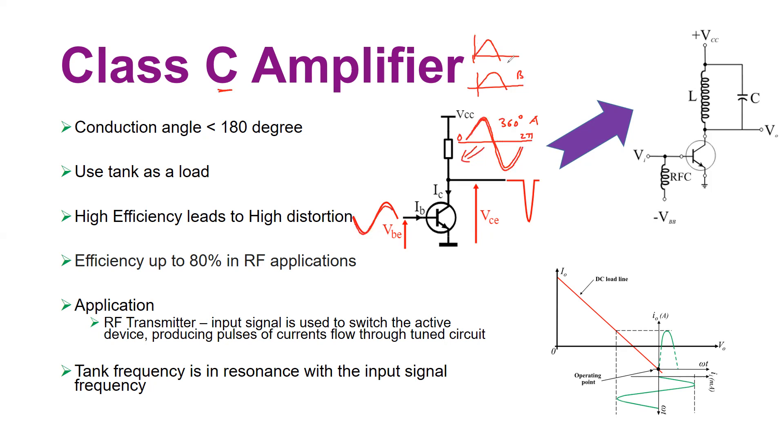Now Class C—the difference is here. Instead of when you apply a sinusoidal signal, you basically switch on the transistor only for a short amount of time, as shown by this short pulse which is in opposite phase to the input signal because it's an inverting signal. Here the conduction angle is less than 180 degrees.